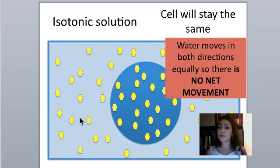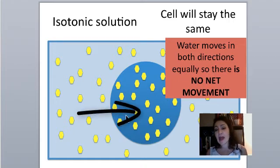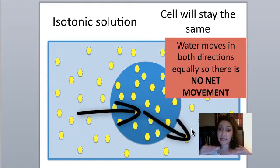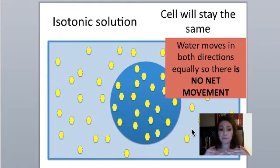Remember that water moves in both directions equally. Water is coming in at the same rate as water is exiting. You can imagine a water molecule moving in here, and then another water molecule is moving out here, and those two molecules are canceling each other out so that there's no net movement of water. And those are all the types of tonicity.